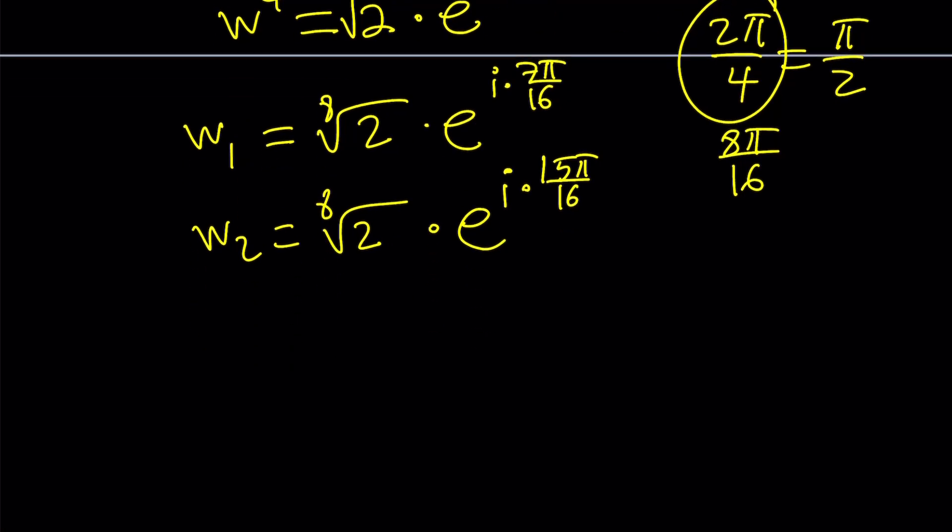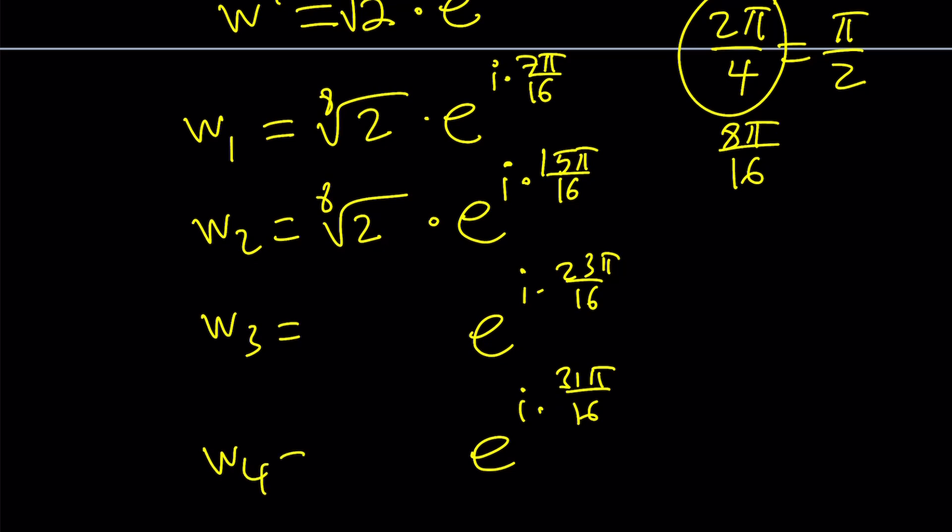So W2 is just going to be the 8th root of 2 times E to the power I times 7 pi plus 8 pi, it's going to be 15 pi over 16. And we're in the second quadrant. And then the next one is just going to be add another 8 pi over 16, then you're going to get 23 pi over 16. And finally, after adding another 8 pi, you're going to be 31 pi over 16. Notice that 31 pi over 16 is still less than 2 pi because 32 pi over 16 is 2 pi. So we're in the fourth quadrant. So these are all the fourth roots of our number.